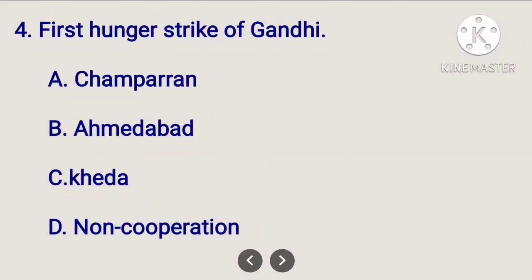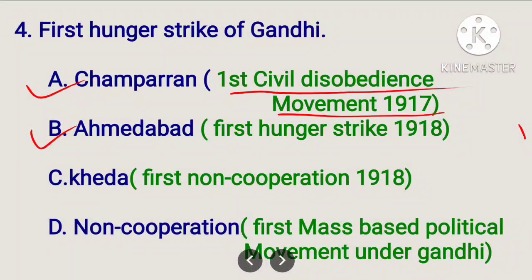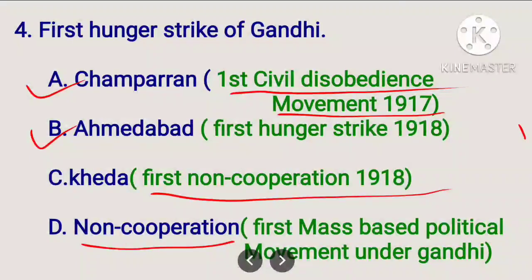First hunger strike of Gandhi. The options include Champaran, Ahmedabad, Khera, and the Non-Cooperation Movement. The correct answer is option B: first hunger strike in 1918. Champaran Satyagraha was the first civil disobedience movement in 1917. Khera was the first Non-Cooperation movement — the first mass-based political movement under Gandhi.